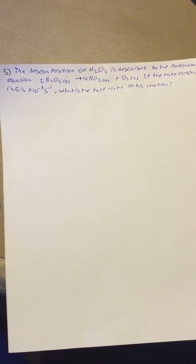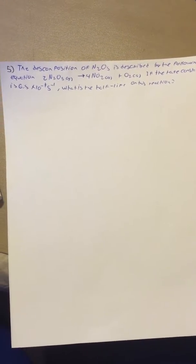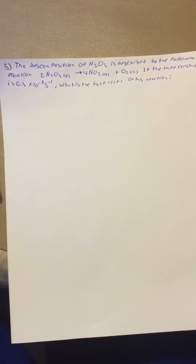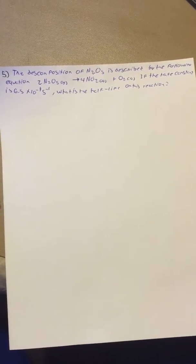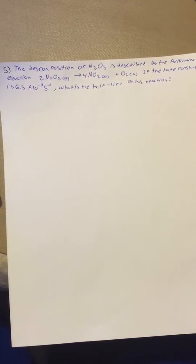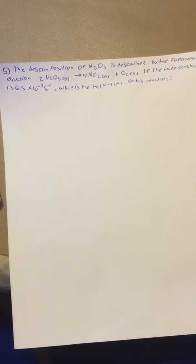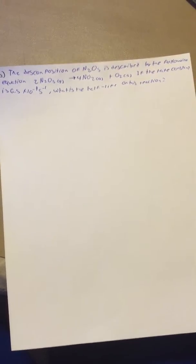Problem number 5 from homework 13. The decomposition of N2O5 is described by the following equation. If the rate constant is 6.5 times 10 to the minus 4 S to the minus 1, what is the half-life of this reaction?